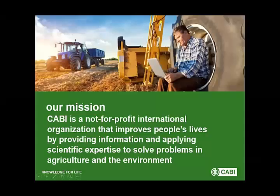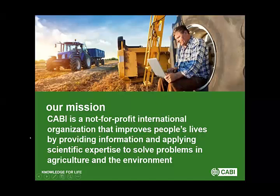CABI is the Centre for Agriculture and Science International. It's a not-for-profit organisation with a mission on how to lose less and feed more — how we could lose less of the crops, make the maximum of our crops' output, and feed more people around the world. We mainly use our scientific expertise to solve problems in agriculture and environment.